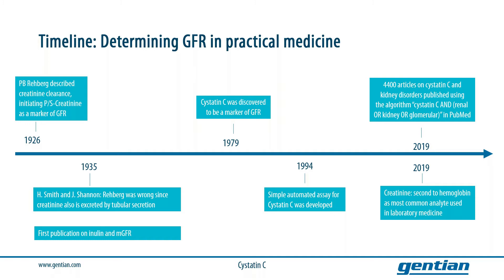A simple automated assay for measuring Cystatin C was developed in 1994. Despite the observations of Homer Smith and James Shannon, creatinine is presently the second most common analyte used in laboratory medicine, second only to hemoglobin, demonstrating the requirement of knowledge of GFR in practical medicine.